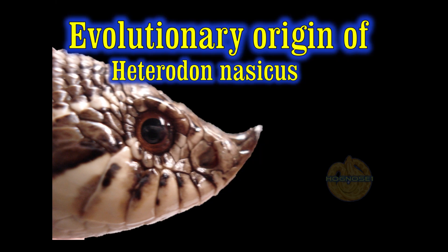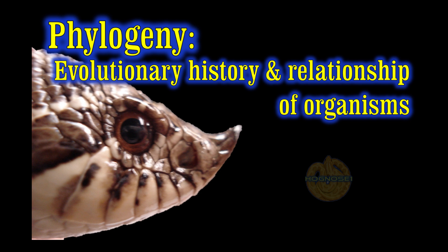This particular topic today, we're going to be looking into the evolutionary origin of the Western Plains Hognose Snake. I may interchange the term nasicus — nasicus just being the scientific specific epithet — so I don't have to continually say Western Plains Hognose Snake. But we're going to be looking today into phylogeny, which is the evolutionary history and relationship of organisms. Today we're going to look at basically something like a time scale — it is the family history for nasicus.